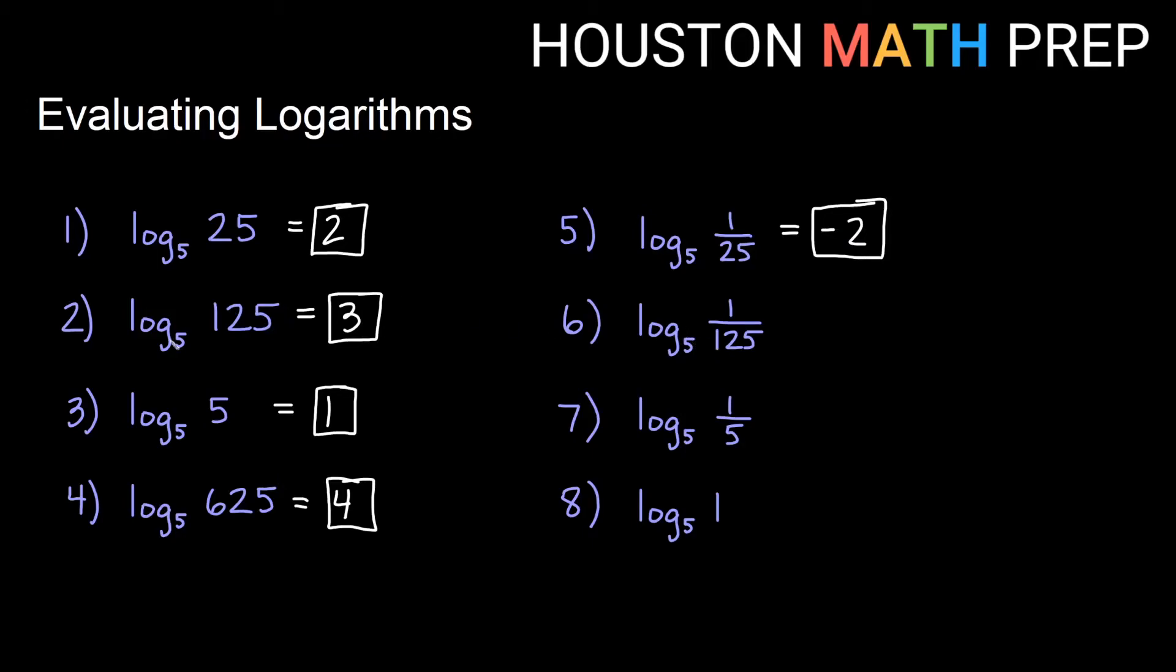This one we had 5 to the third was 125 so the answer was 3 over here. Since this is the reciprocal of 125, 1 over 125 is actually the negative 3 power of 5. Number 7 here is just a reciprocal idea of number 3. This was 5 to the 1 gave us 5, so this is 5 to the negative 1 gives us the reciprocal of 5.